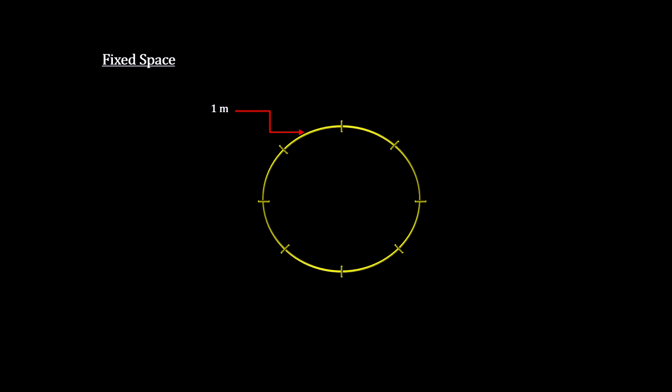Consider an eight-meter circle with marks one meter apart. If we are at the top mark and all the other marks are moving away from us, then from other points of view, marks are getting closer. The system is not homogeneous.